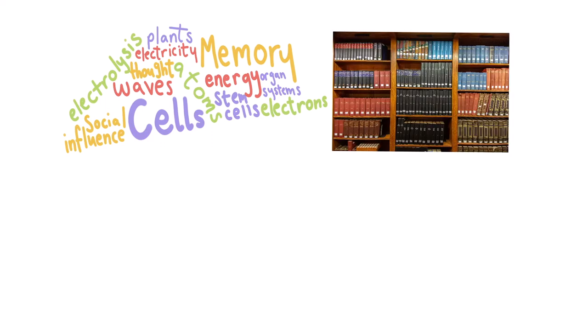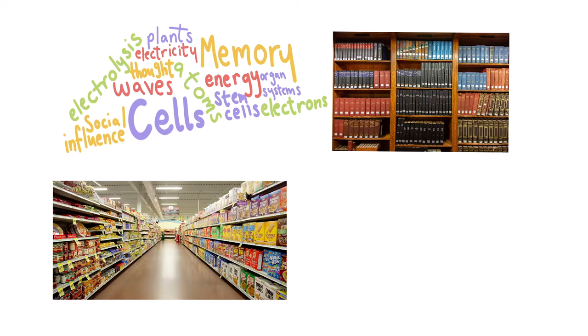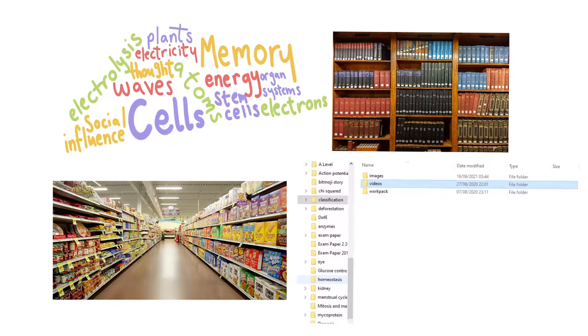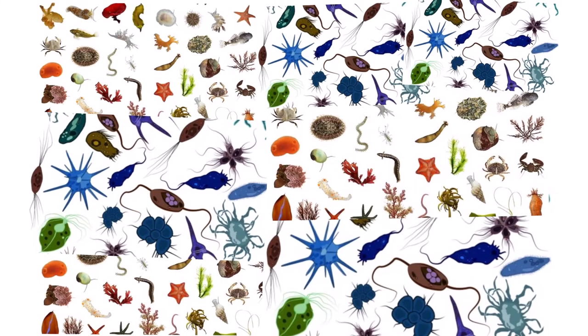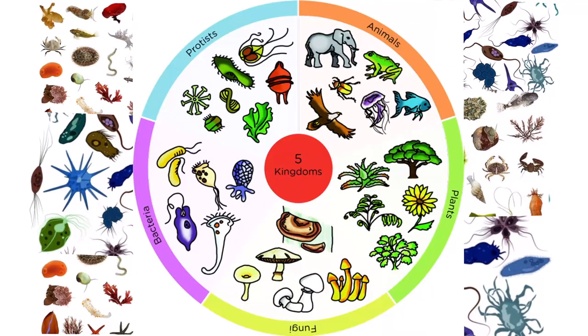Hello, Mrs. H here. Organising things involves categorising them based on similarities, whether it be subjects at school, books in a library, food in a supermarket — it makes things easier to find. Organisms have also been placed into categories based on their similarities, and this is called classification.